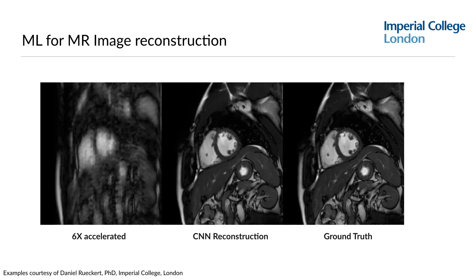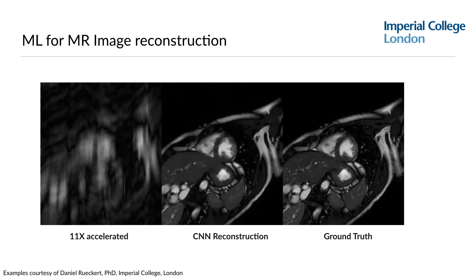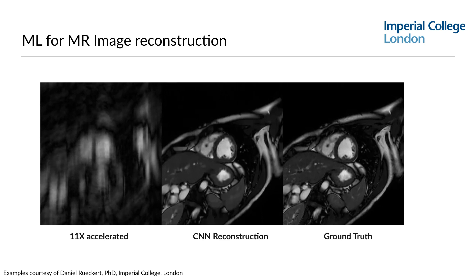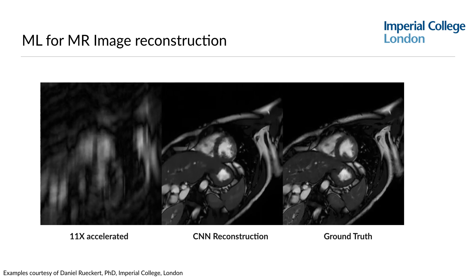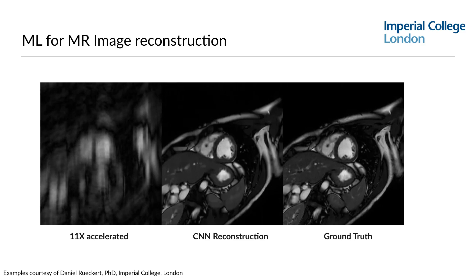This is just one example with a six-fold accelerated sequence. This other example shows where the authors really pushed their technique and managed to obtain an 11-fold acceleration with still very good image quality in the reconstruction. In the middle you see the convolutional neural network-based reconstruction, and on the right side you see the ground truth, which is the 11 times longer duration acquisition that sampled the full k-space. These are really great examples of how machine learning has helped to further accelerate cardiac MR imaging, and I'm pretty convinced we'll see these techniques coming to the clinic in the coming years.